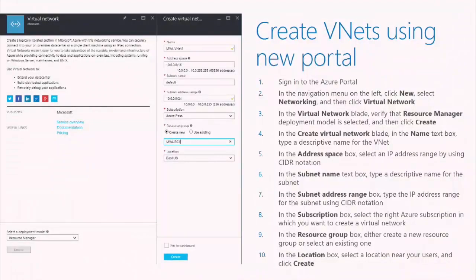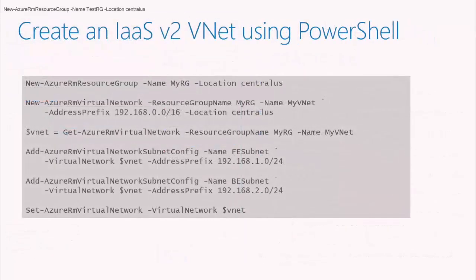In the newer portal you'll use the Resource Manager model. The process of creating a VNet is similar: go to the Marketplace, search for a virtual network, and follow the wizard to fill out the properties. You'll establish your first subnet as part of creating the VNet and can add additional subnets later. Doing it via script is fairly straightforward using PowerShell cmdlets: New-AzureResourceGroup, create a virtual network, create a subnet config, and add the configuration to the network. This is a lot simpler than using the configuration file method from the classic portal.